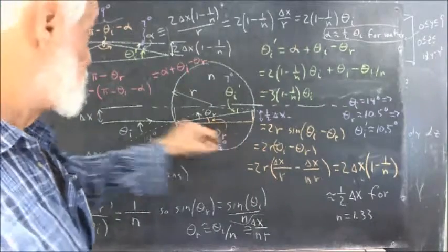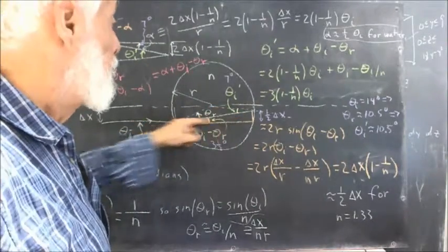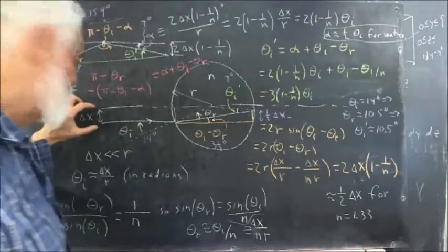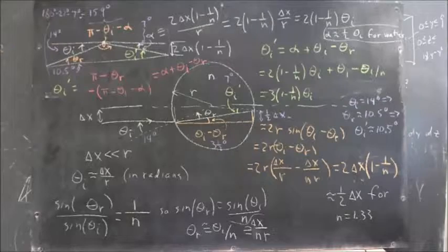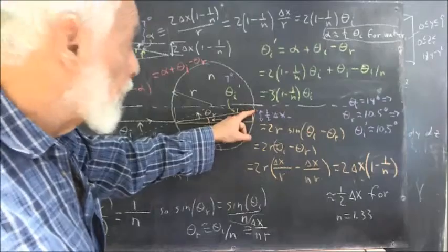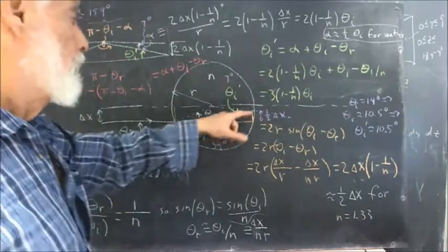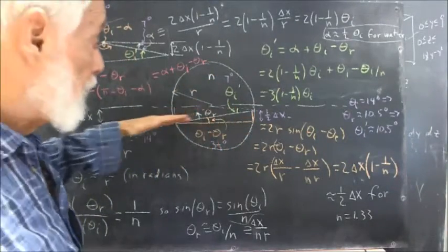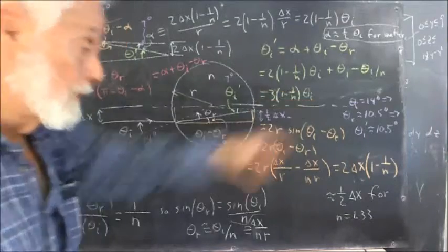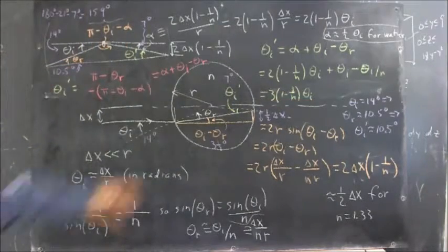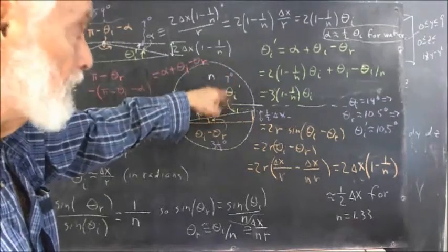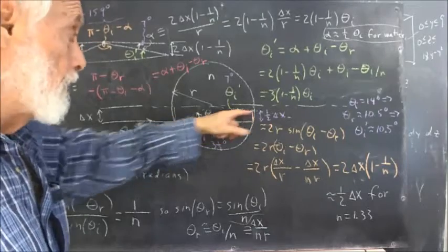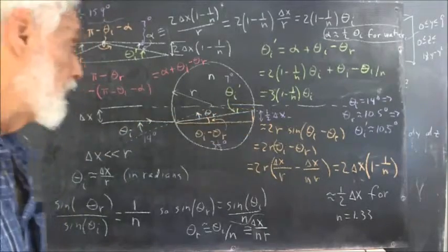For water, the ray will move twice as close to the axis, assuming a small delta x. Out at larger delta x, this approximation doesn't hold anymore. What we ultimately want to find, in addition to where this ray hits the back of the lens, is the angle of incidence as the ray hits the back of the lens. We'll call this angle theta sub i prime — the second incident angle, the angle at which the refracted ray is incident on the back of the lens.